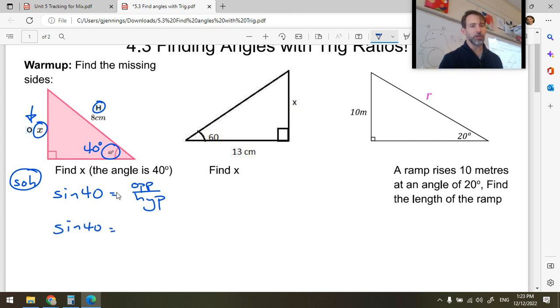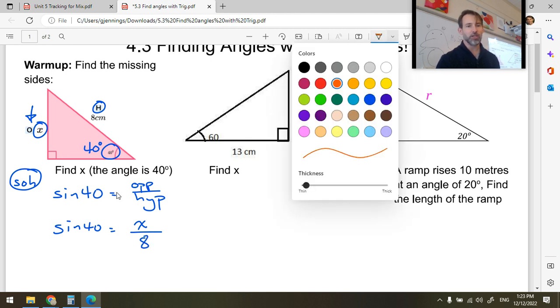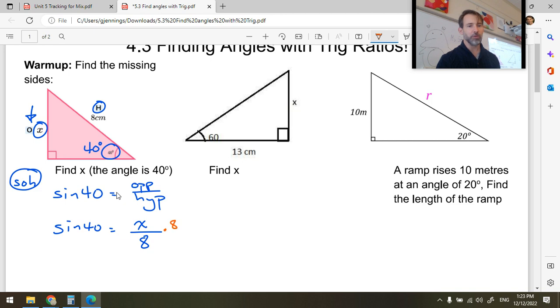Sine 40 equals x, which is the opposite, over the hypotenuse 8. At this time, we get out an inverse operations pen and multiply both sides by 8. The reason why we choose to multiply both sides by 8 is we were dividing our unknown by 8. Multiplication is the opposite of division. So that will cancel and leave us with equals x.